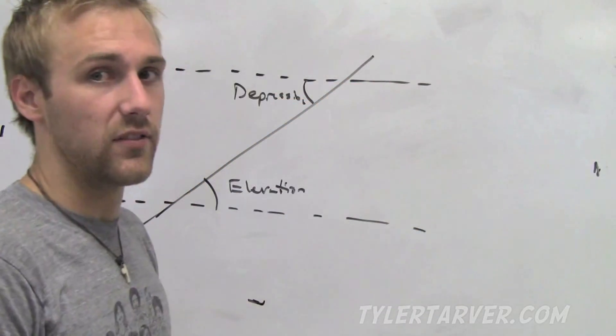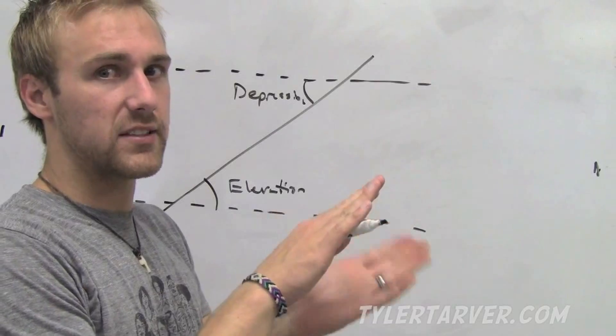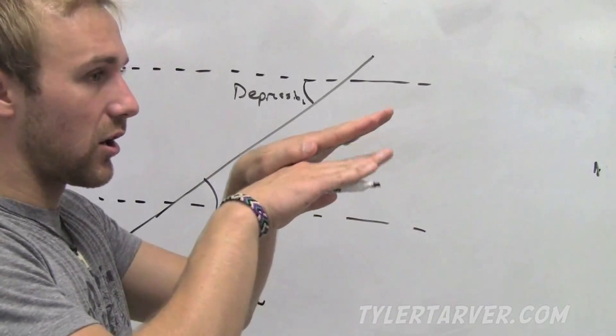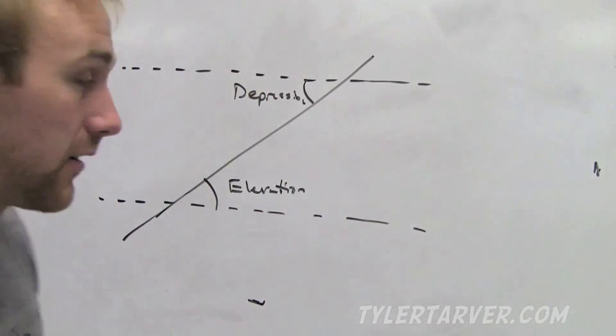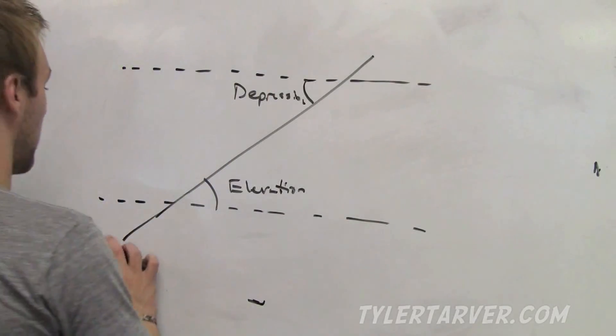So, elevation, up. That's the angle. Depression, going down. So, that was easy. Let's do an example problem.